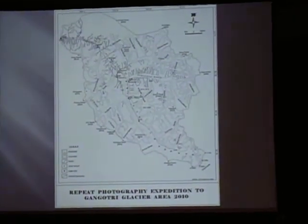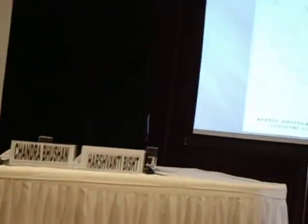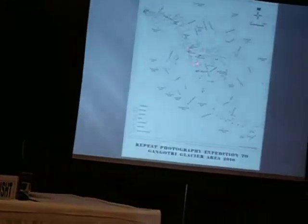We started from Gangotri. Gangotri is 18 kilometers from Gangotri Glacier — we crossed the glacier, came to Tapovan, then went to the Meru side, came back, went up to the Chokhamba base camp, then back again, and we tried to go to Chaturangi Bamak course. This is the route map of our trek and expedition.